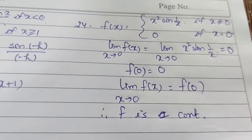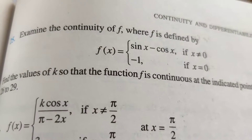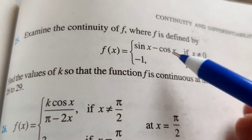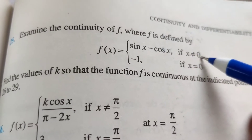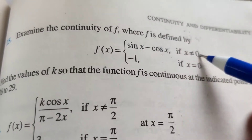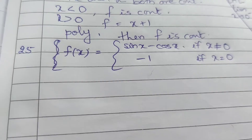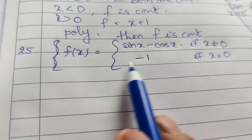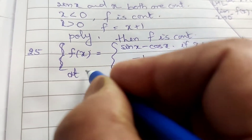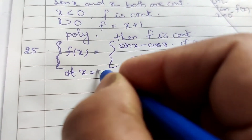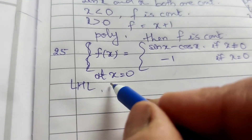Question number 25. Examine the continuity of f, where f is defined by f(x) = sin x minus cos x if x ≠ 0, and minus 1 if x = 0. Check continuity at x equal to 0. Now find the left hand limit as x tends to 0.